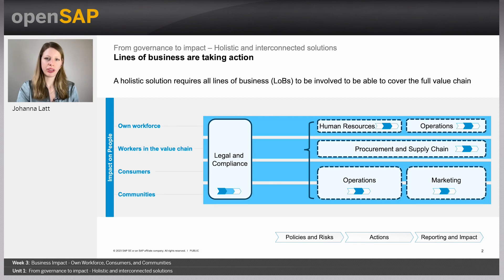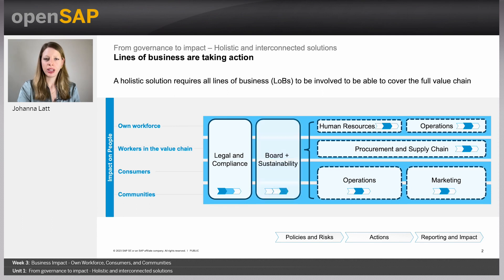Step two covers actions that come out of the high-level risk assessment, documented on corporate level but handled by the LOBs in practice — human resources and operations for your own workforce, procurement and supply chain for workers in the value chain, and often operations and marketing for consumers and communities. Then for step three, we bring it back to corporate level for reporting and impact assessment, often handled by the board or sustainability teams in collaboration with the lines of businesses.